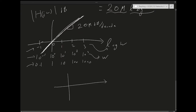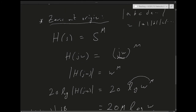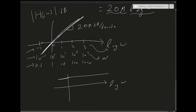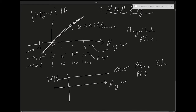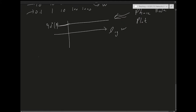As for the phase of zeros at the origin: each zero introduces a phase of plus 90 degrees, so instead of minus 90 degrees per pole, we have plus 90 degrees per zero — constant at 90 times m degrees. That's the phase Bode plot. This was zeros at the origin; now, what about simple poles and simple zeros?